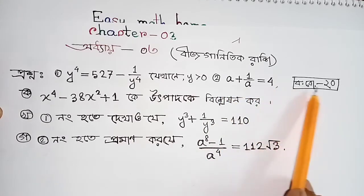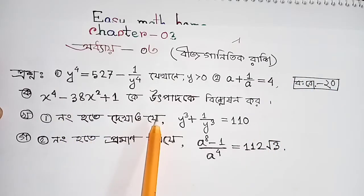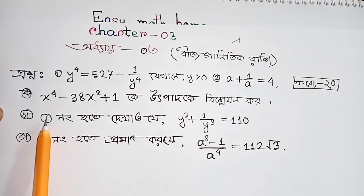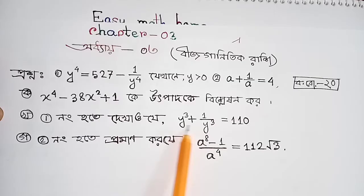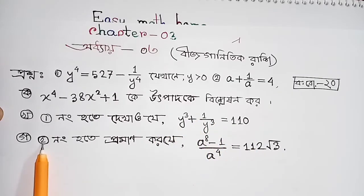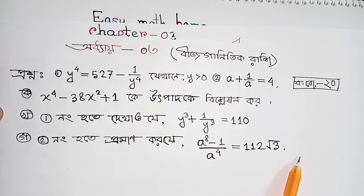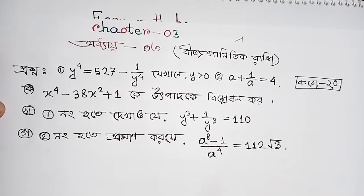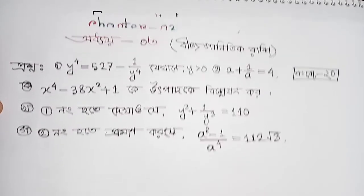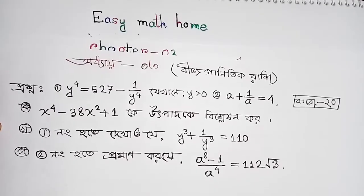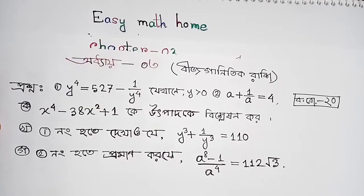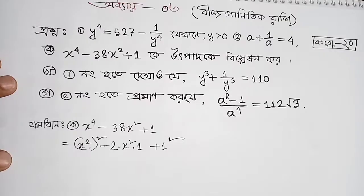I am going to write it on the board, from a 2020 exam. How many numbers equal 1? The first answer is 810, and the second is 112 root 3. So I am going to start the solution.